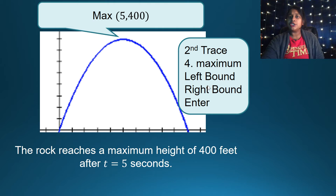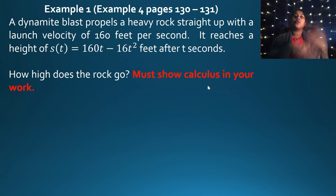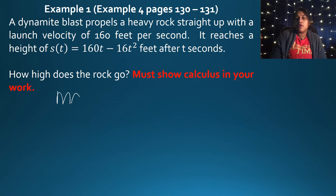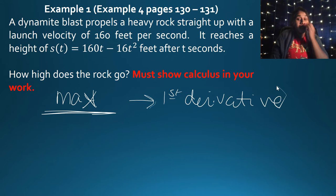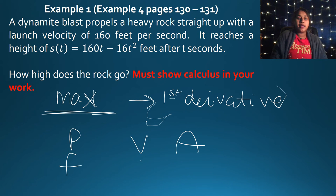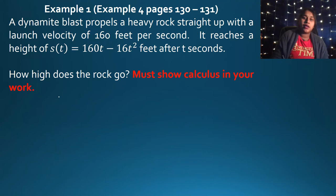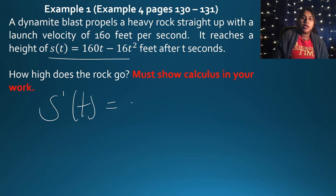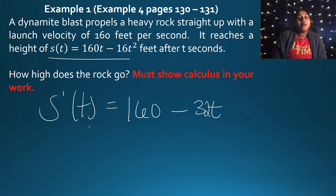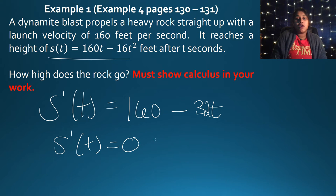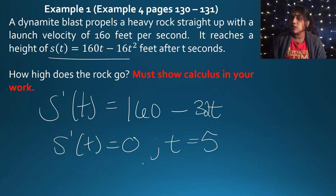What if we don't have the graph? We go back to calculus. To find how high the rock goes, we're looking for a max point, which requires the first derivative test. Taking the derivative of the position function gives us 160 minus 32T. Setting S prime equal to zero and solving, we get T equals 5 — the same answer we found before from the graph.